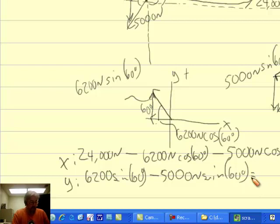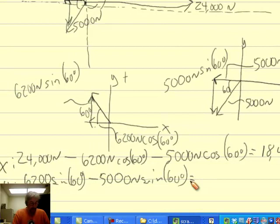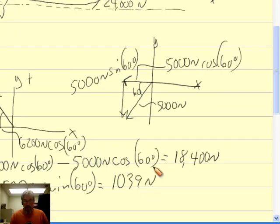But 5,000 newtons times the sine of 60 is negative. So I'll sum these up, 6,200 sine of 60 minus 5,000 sine of 60. Here's what I come up with. This ends up still being positive. It's 1,039 newtons.